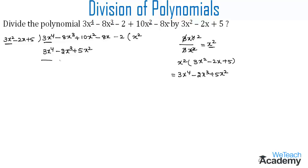Now let us subtract these polynomials. The additive inverse of 3x⁴ is minus 3x⁴, the additive inverse of minus 2x³ is plus 2x³, and the additive inverse of plus 5x² is minus 5x². The first two terms cancel, minus 8x³ plus 2x³ gives minus 6x³, and 10x² minus 5x² gives plus 5x².